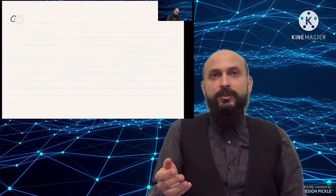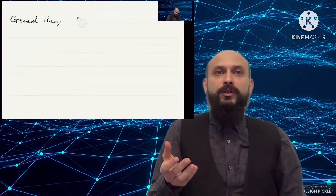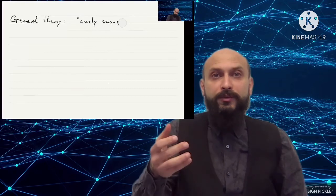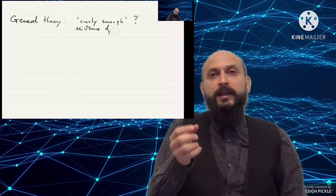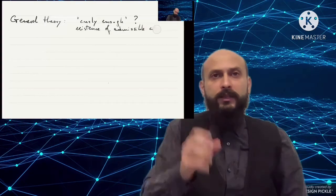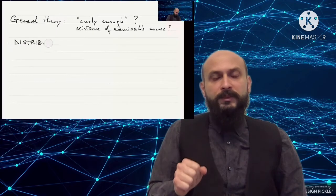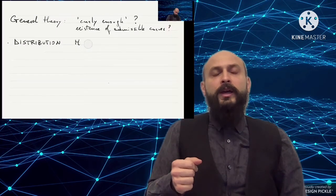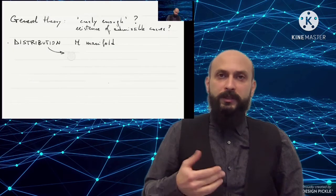After having discussed this basic example of the Heisenberg group, we will discuss the general theory. The general definition of a Sub-Riemannian manifold will follow as soon as we formalize the notion of a distribution being curvy enough — we need this notion to imply that each pair of points is connected by an admissible curve. So let's give some formalization of these notions. By a distribution on a manifold, we mean a sub-bundle of the tangent bundle.